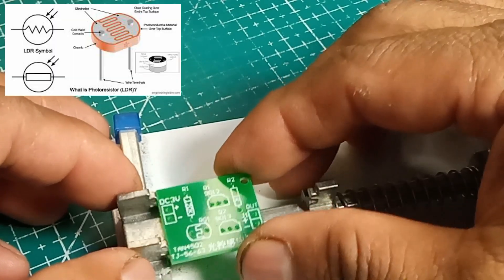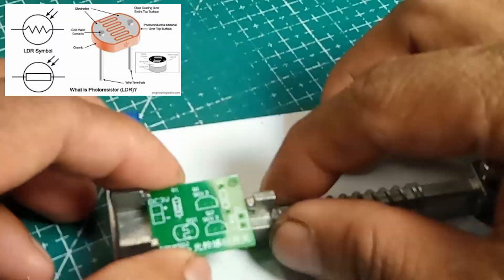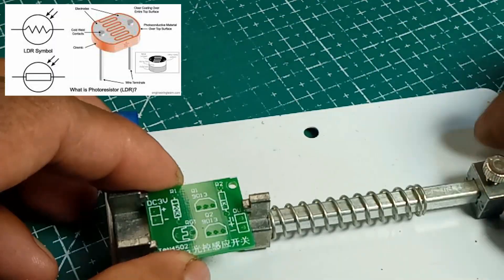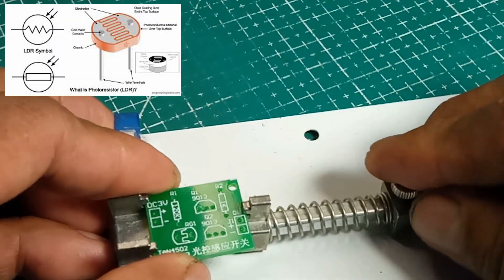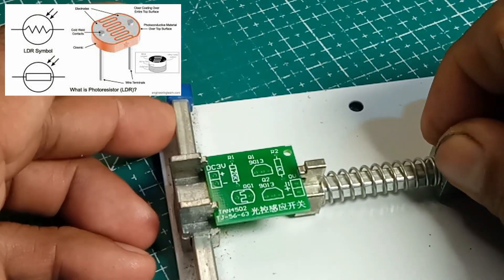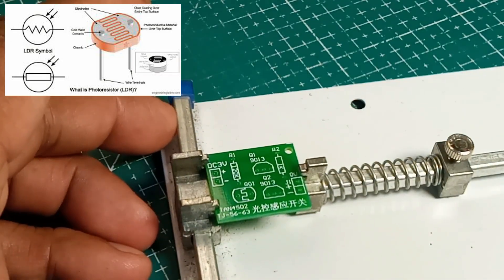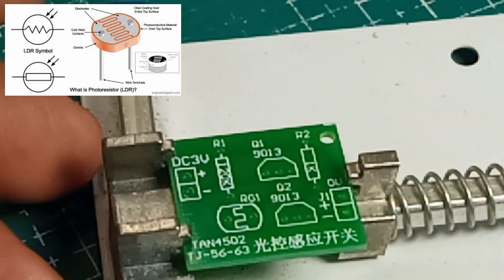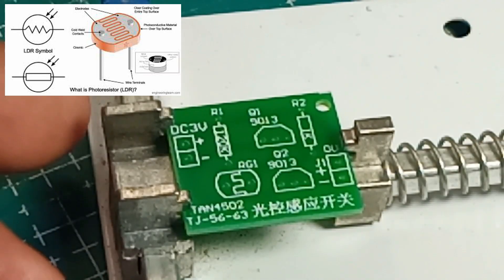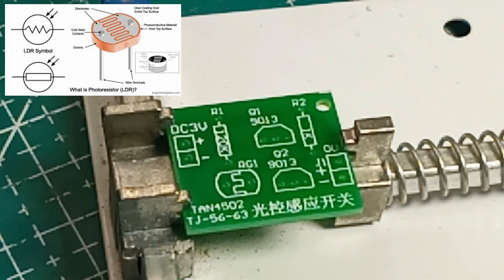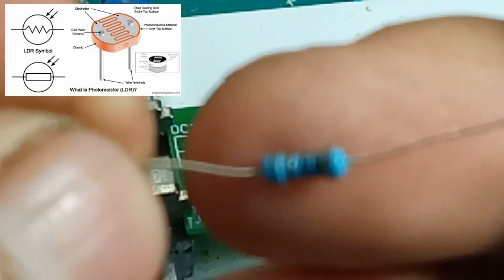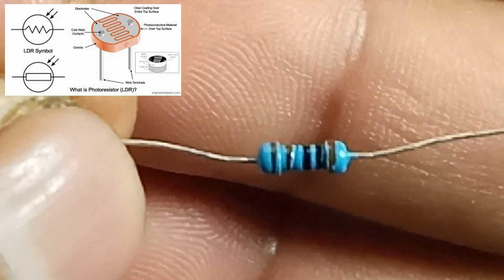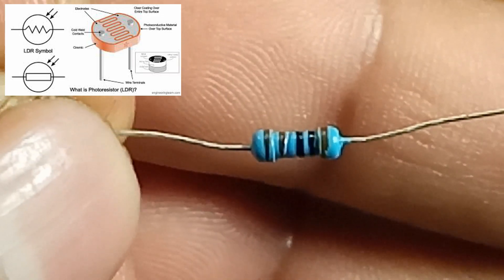1. LDR Basics. An LDR is a type of resistor that changes its resistance depending on the light intensity. It has low resistance in bright light and high resistance in darkness. Characteristics: when exposed to light, the electrons in the LDR gain energy and become free to conduct electricity, resulting in lower resistance.